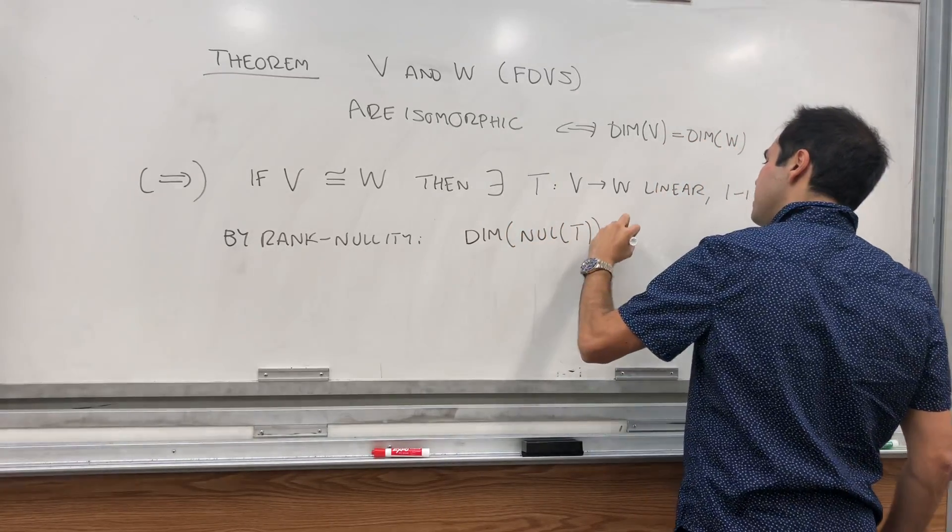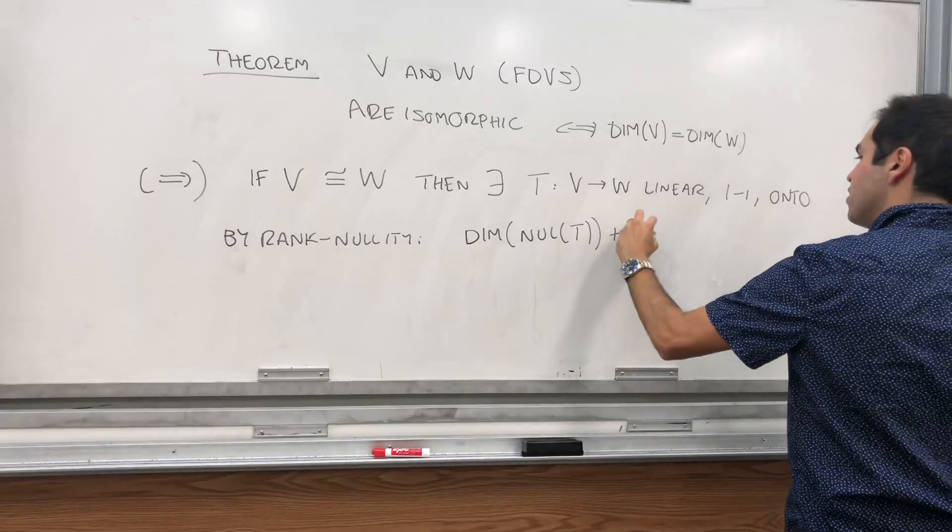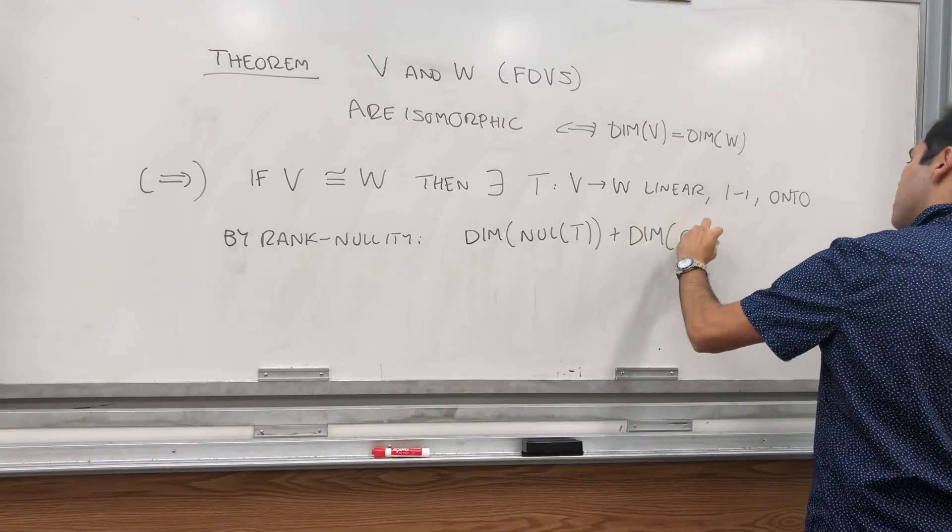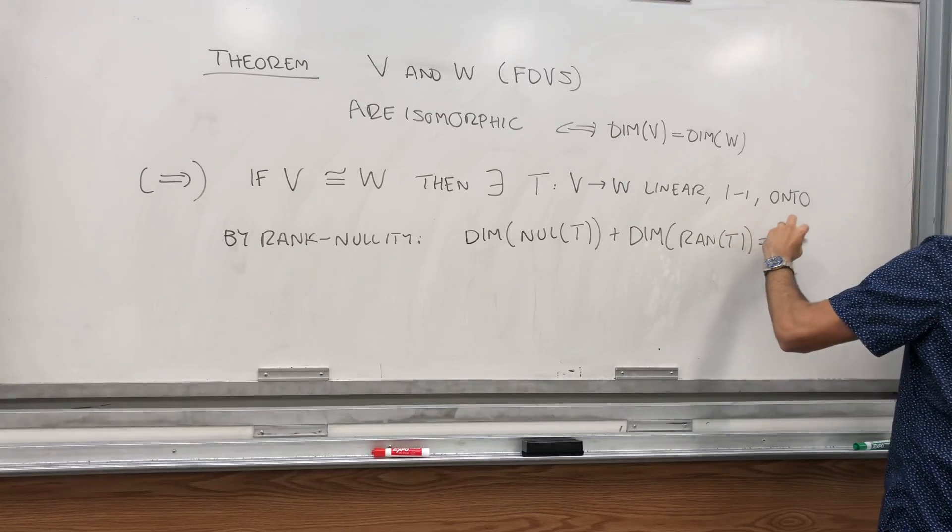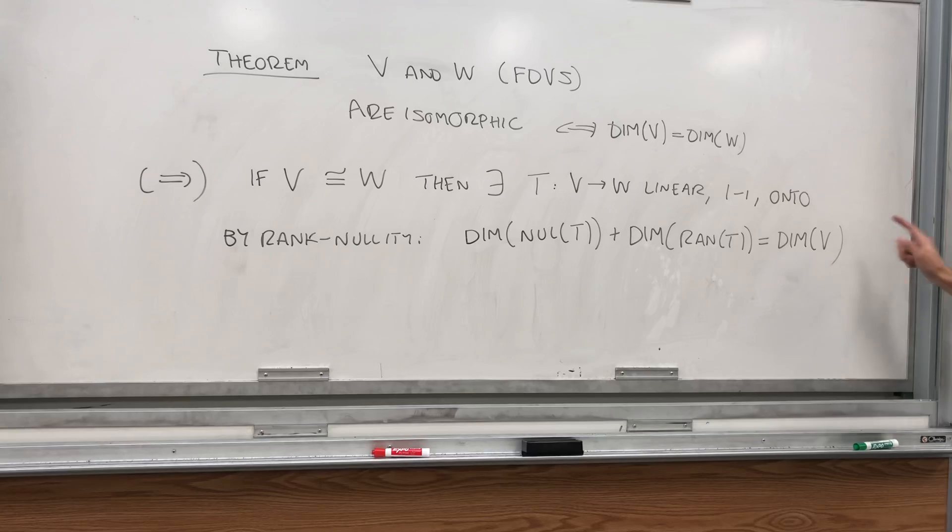So, the dimension of the null space of T plus the rank of T, which is the dimension of the range of T, equals to the dimension of the input space. And there's a wonderful proof about this that I've done in another video.